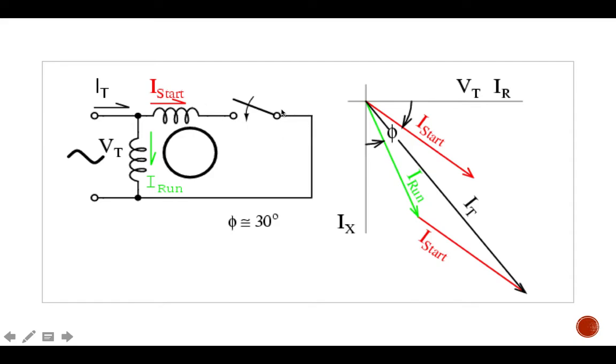As you can see in the circuit, there's no capacitor. There's only a starting winding and a run winding. So the input current is here and the input voltage is here. This is the starting winding, this is the run winding and this is the centrifugal switch.